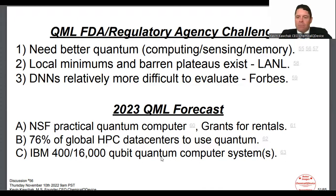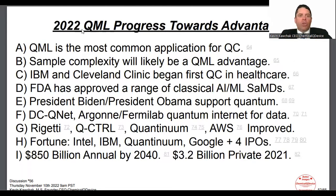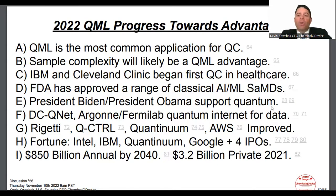The progress this year has been pretty good. QML is the most common application for quantum computing, seen internationally. Sample complexity will likely be a QML advantage — always looking for applications where quantum can't be caught up to by classical, even decades down the road. IBM and Cleveland Clinic began their first installation of a quantum computer in healthcare last month. FDA has approved a range of classical AI/ML SAMDs — a steady incorporation of more deep learning.